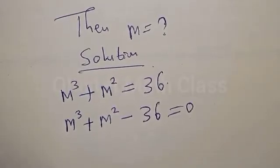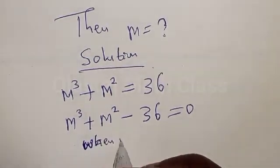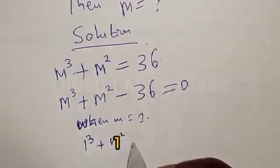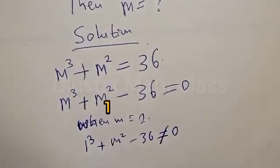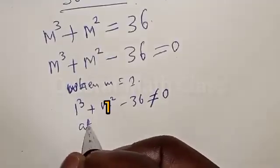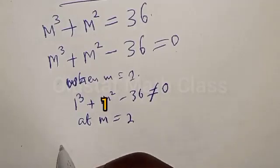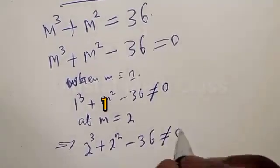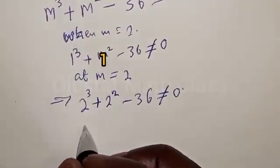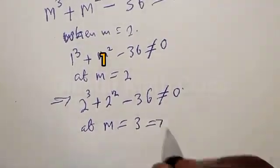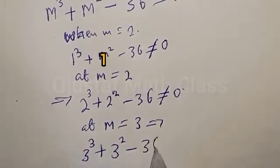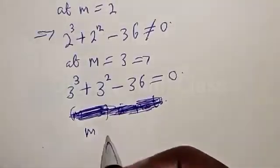Let's find one of the roots of this equation. Let's test at m equal to 1: 1³ plus 1² minus 36 is not equal to 0. Then at m equal to 2: 2³ plus 2² minus 36 is not equal to 0. Then at m equal to 3: 3³ plus 3² minus 36, yes, is equal to 0. Therefore m equals 3 is one of the roots.